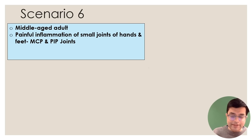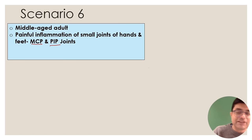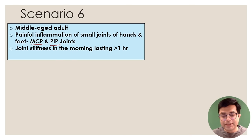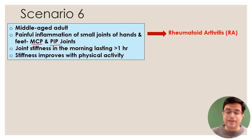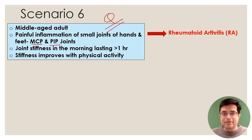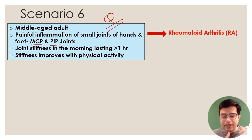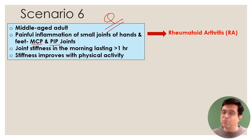Scenario six: a middle-aged adult with painful inflammation of small joints of the hands and feet — particularly the metacarpophalangeal and proximal interphalangeal joints. Joint stiffness is present, worse in the morning and lasting more than one hour, improving with physical activity. The likely diagnosis is rheumatoid arthritis. Clues: morning stiffness more than one hour, MCP and PIP joint involvement, improvement with activity. Rheumatoid arthritis is associated with HLA-DRB1 in about 65–70% of patients.